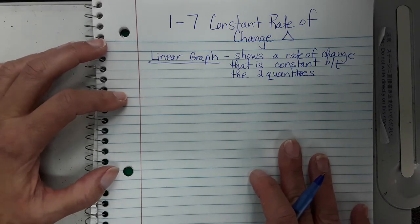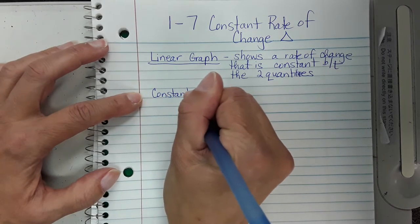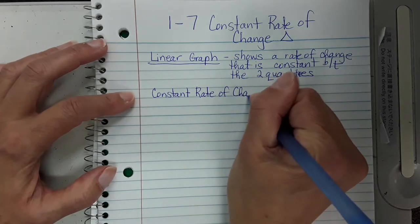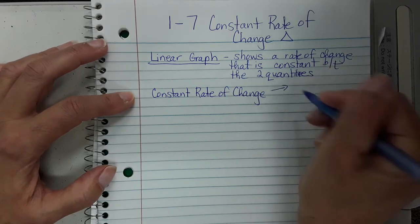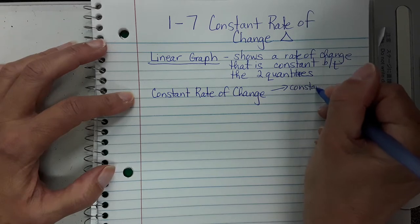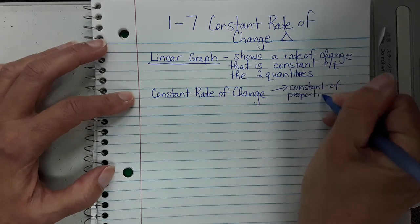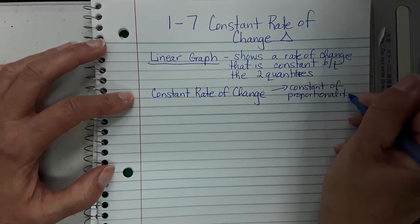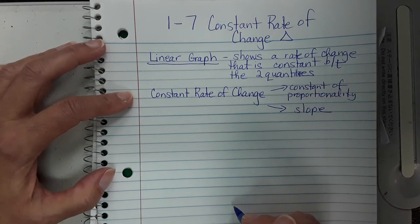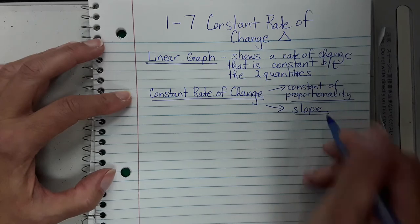A constant rate of change is also called different things. Tomorrow we're going to talk about slope. If it has a constant rate of change, it could also be known as the constant of proportionality — that happens when it goes through (0, 0) and it's a straight line. So constant rate of change is also known as the constant of proportionality and also called the slope.